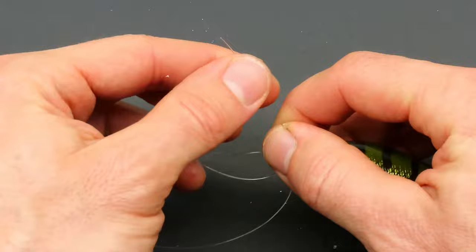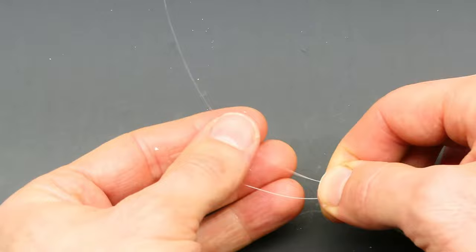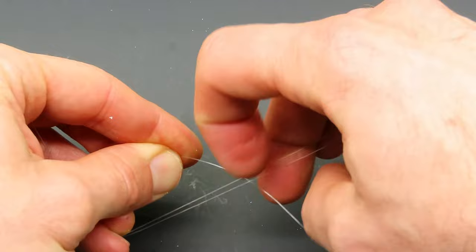Now you can pull that down fairly tight and just like with the regular uni knot you're going to bring your tag end back and behind the other two lines.